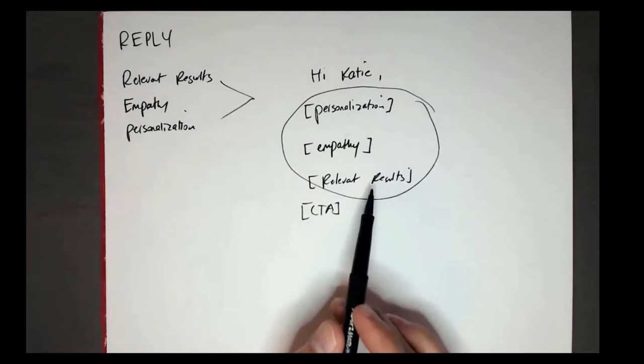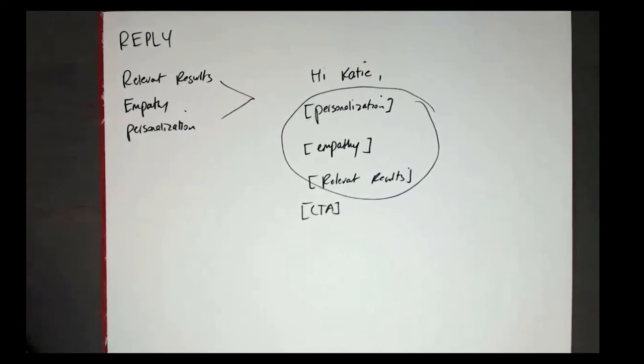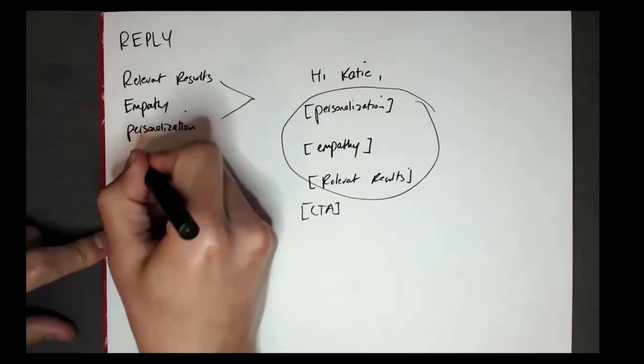On a cold call it sounds like: 'Hey Katie, Jason with Blissful Prospecting — look, I know I probably caught you in the middle of something, but do you have a minute? I can tell you why I'm calling and you can let me know if you want to keep chatting.' Then: 'I was on your LinkedIn and noticed this, a problem I hear is X, one of the ways companies are fixing it is Y — can I ask two or three questions to see if this would be relevant for you?' That's the framework to get down.